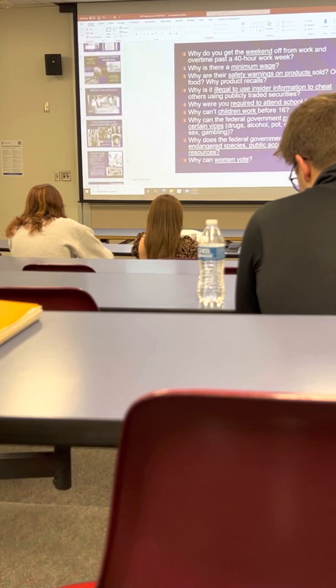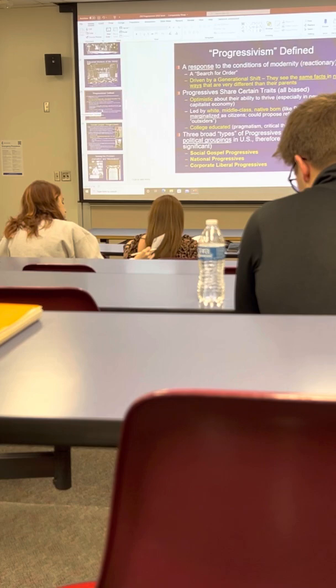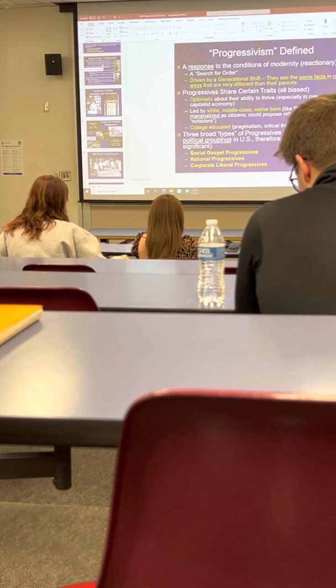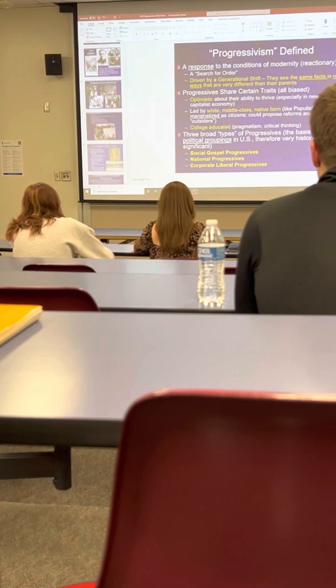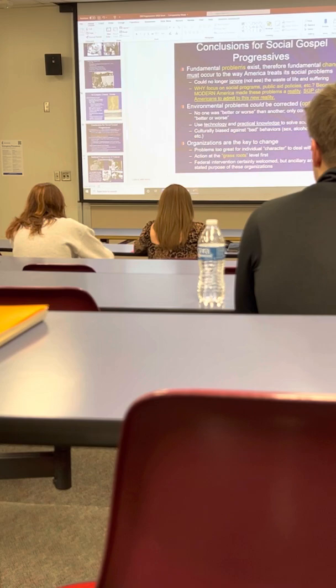Last time I worked through and made the point that there are three types of progressives: social gospel, national, and corporate liberals. I spent the majority of the time talking about social gospel, largely not because they're harder to understand but because they're a more diverse group. My idea of ethical treatment is different from yours. Social gospel progressives see these problems, create an organization to deal with them, and change the environmental conditions that exist.